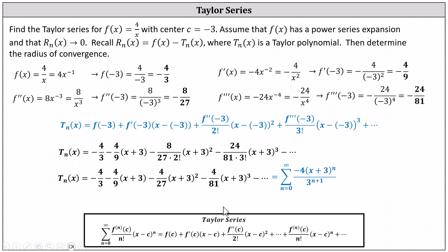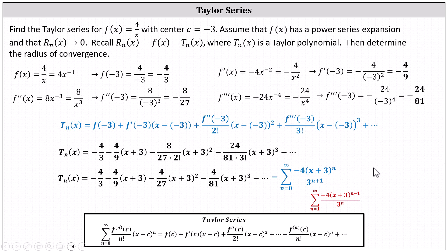I also want to mention we could start the series at n equals one. If we did that, this would be the equivalent Taylor series. But I believe in a homework that did request that we start at n equals zero. Now we'll determine the radius of convergence using the Taylor series where the series starts at n equals zero. Let's do this on the next slide.